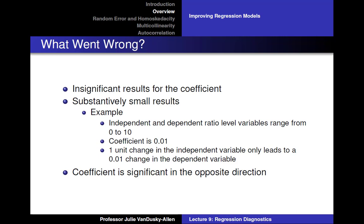In this lecture I'm going to teach you some simple techniques to troubleshoot possible problems you can run into when you are running a regression analysis. Imagine you ran a regression and the results of the analysis were not what you expected. Perhaps the results for the significance test for the coefficient were insignificant. Perhaps the coefficient was significant, but substantively the coefficient was small, so it appeared that the independent variable had a small impact on the dependent variable.